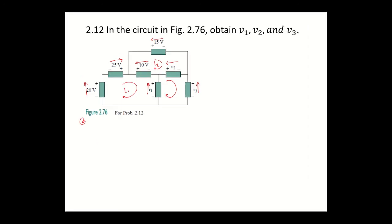At loop 1, you have voltages of 20 volts, 25 volts, 10 volts, and V1. From your KVL: your 20 volts has the same direction as your loop, so it would be positive 20 volts. Your 25 volts is the same direction as your loop, so it would be positive 25 volts. Your 10 volts is opposing the direction of your loop, so it would be negative 10 volts. Your V1 also opposes the direction of your loop, so it would be negative V1, equal to 0.